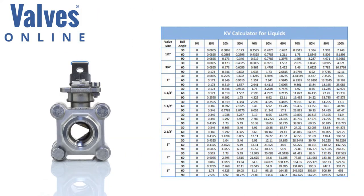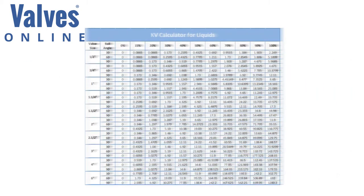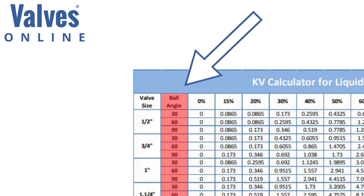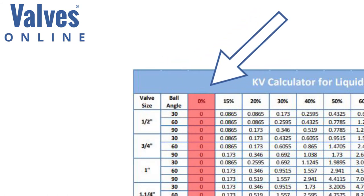This display chart gives you a guide to sizing a control ball valve that matches your required flow. The chart displays from left to right: valve size, angle or V cutaway of ball segment, and opening of ball V segment in a percentage term.